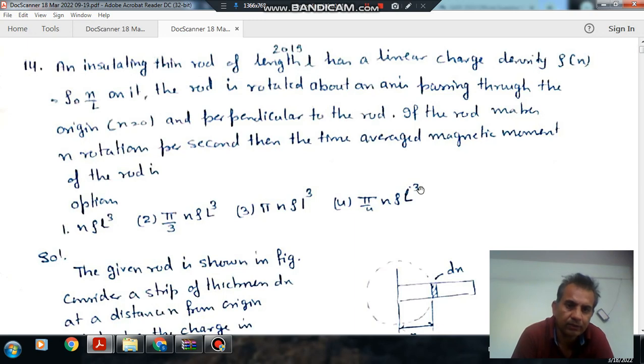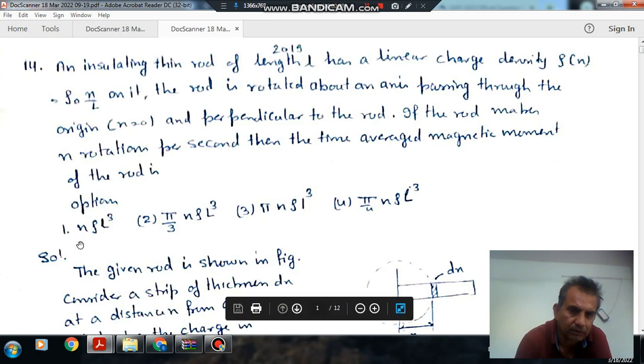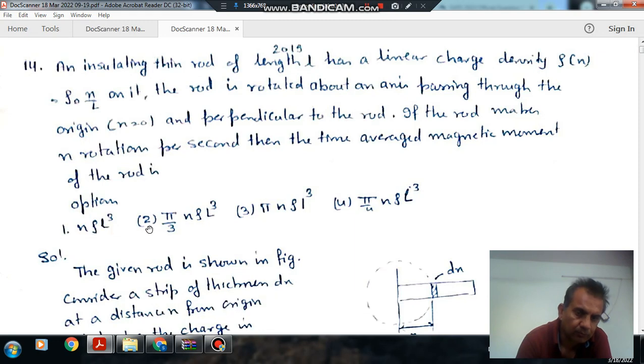An insulating thin rod of length L has a linear charge density ρ = ρ₀x/L on it. The rod is rotated about an axis passing through the origin x = 0 and perpendicular to the rod. If the rod makes n rotations per second then the average magnetic moment of the rod is: option 1, nρ₀L³π/3; option 2, nρ₀L³/3; option 3, πnρ₀L³.